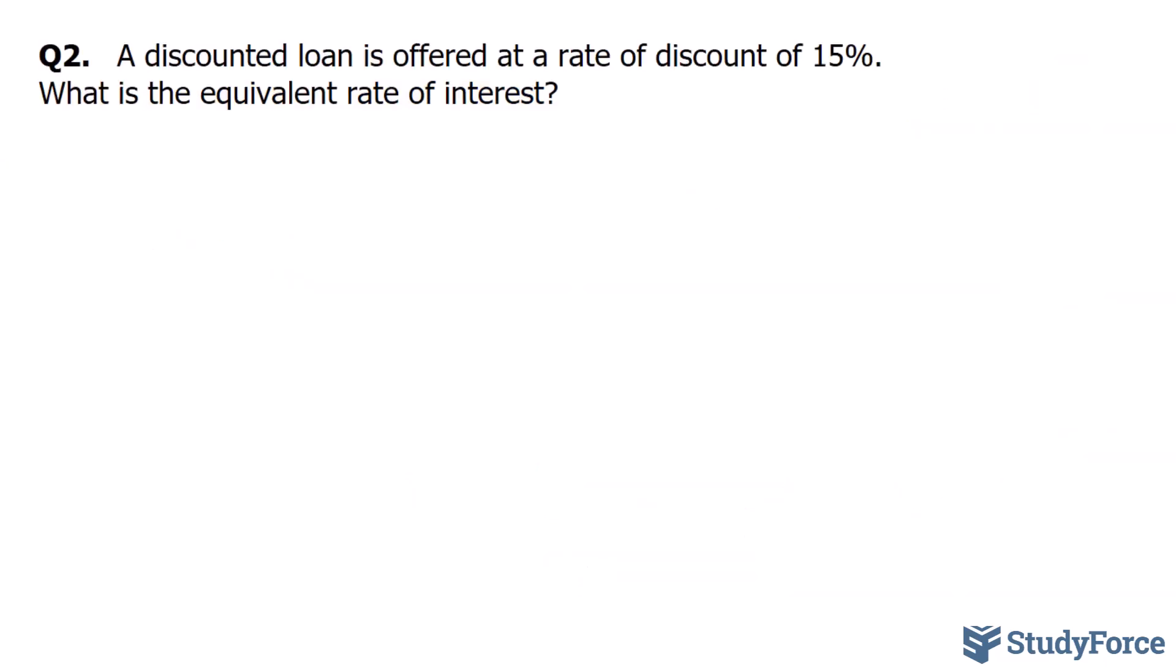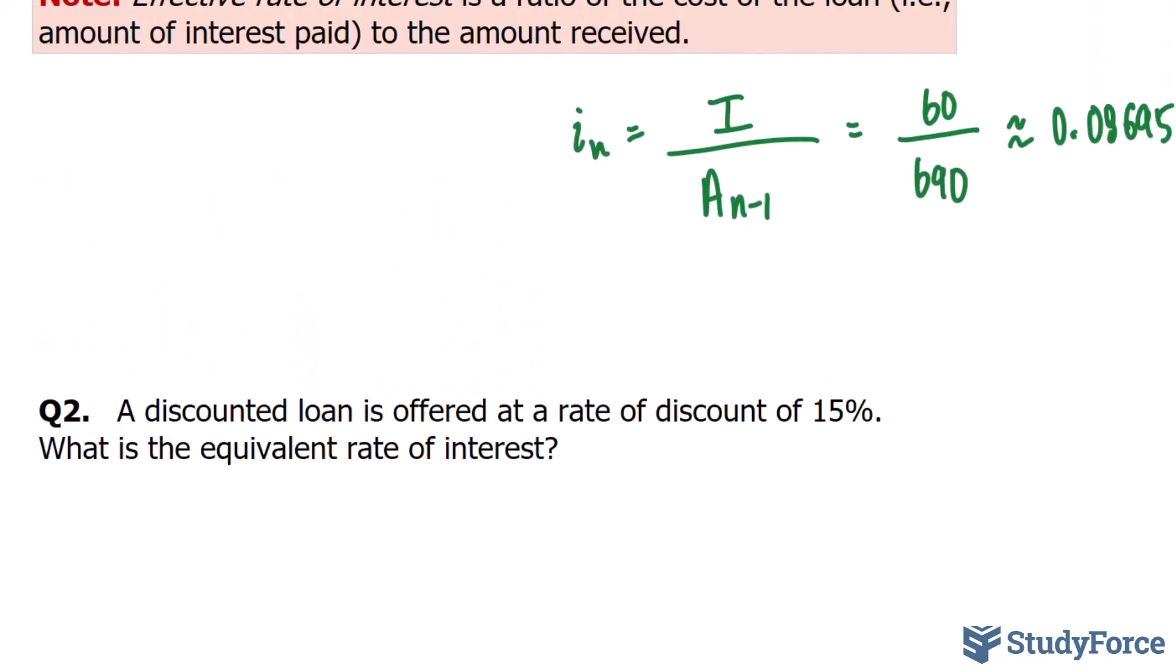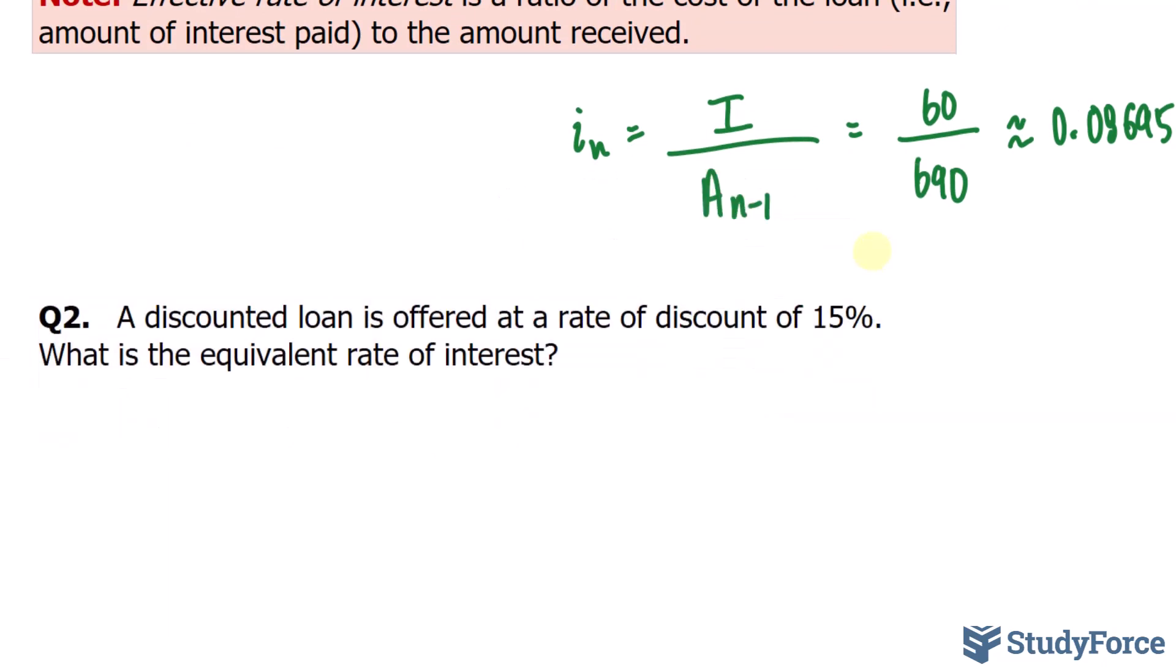A discounted loan is offered at a rate of discount of 15%. What is the equivalent rate of interest? Now, I just want to remind you that the formula that we just derived will be used here. The difference between this question and question number 1 is that this one is a little more general. They don't tell us how much is being loaned to us, but we are told that it is a rate of discount of 15%.